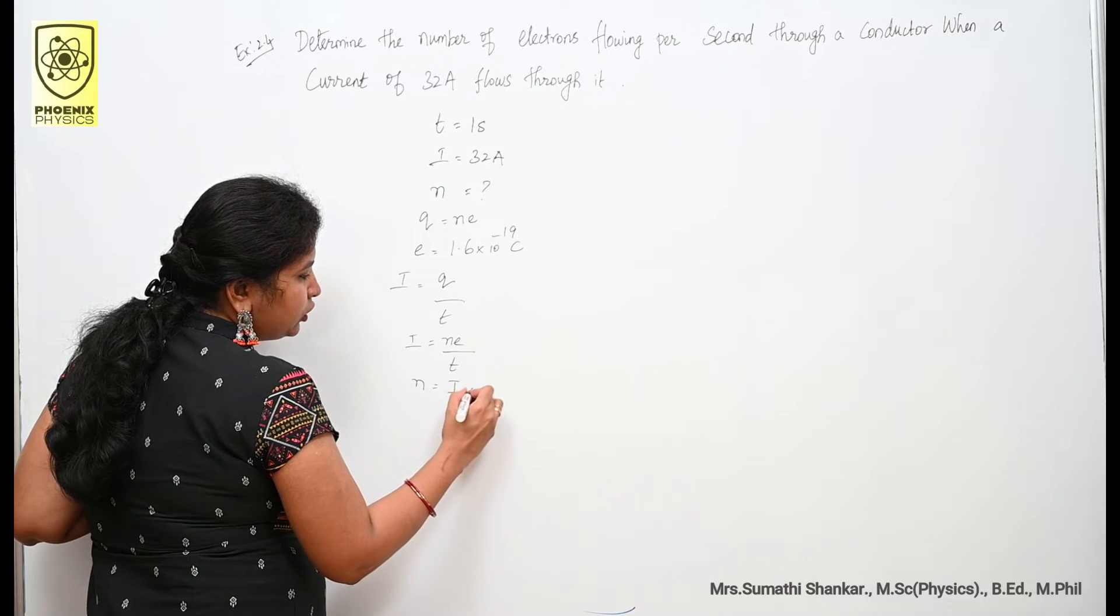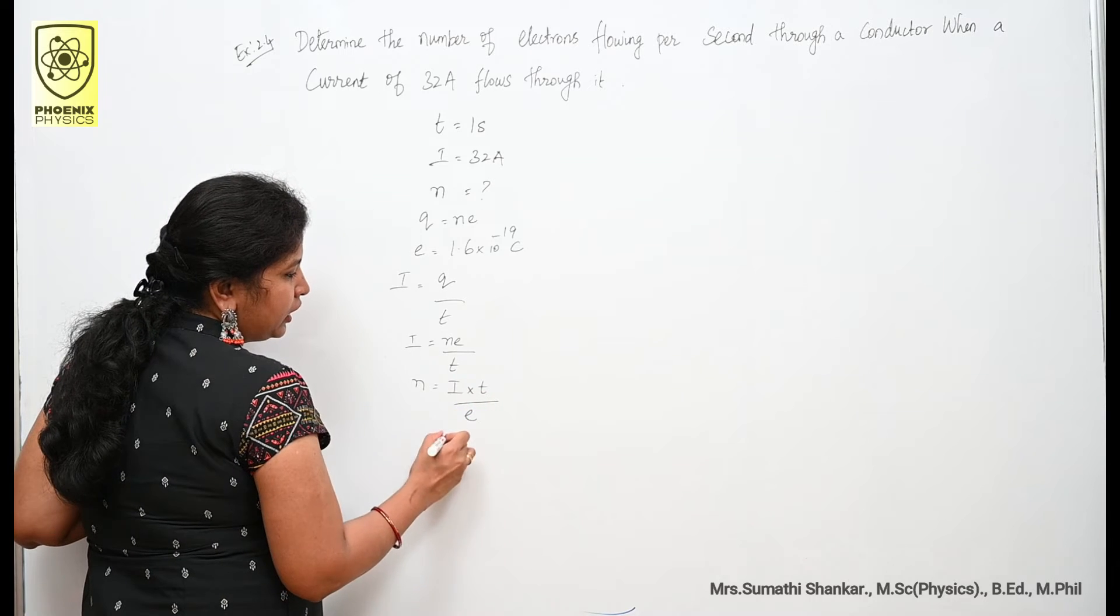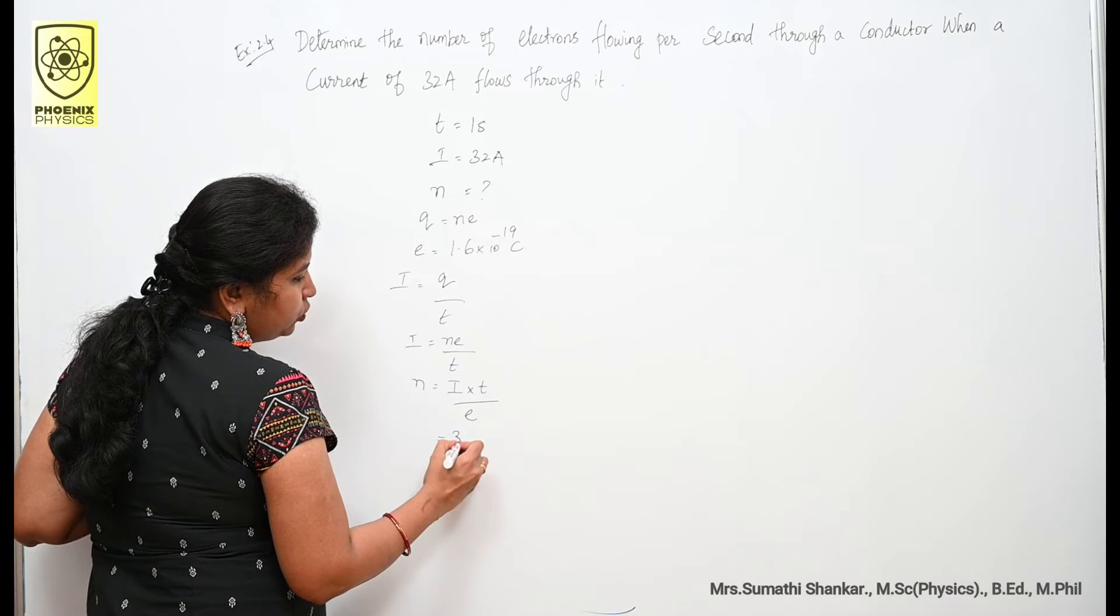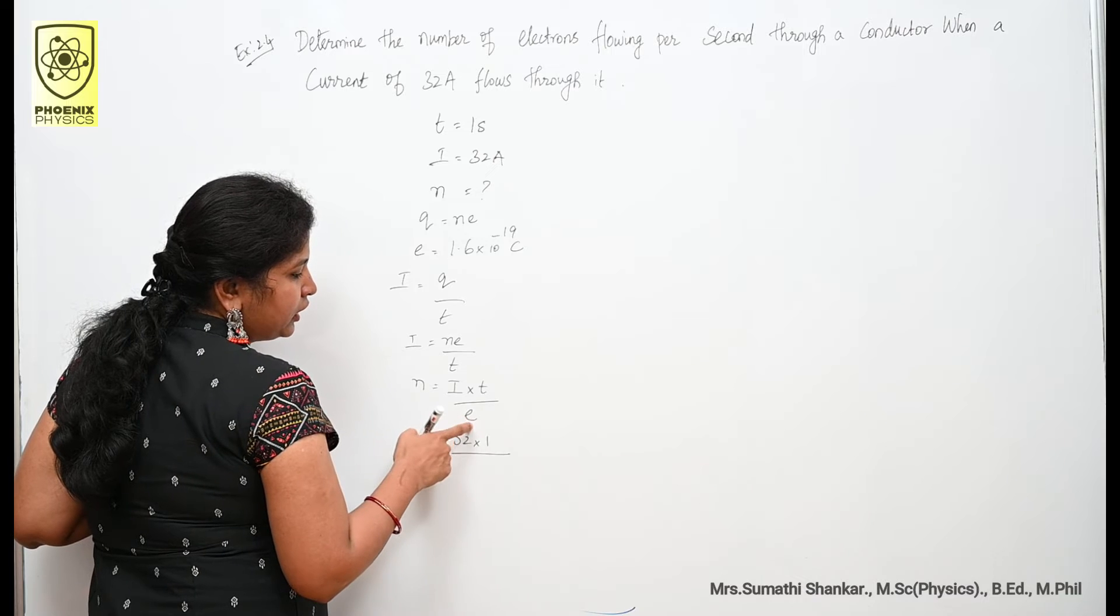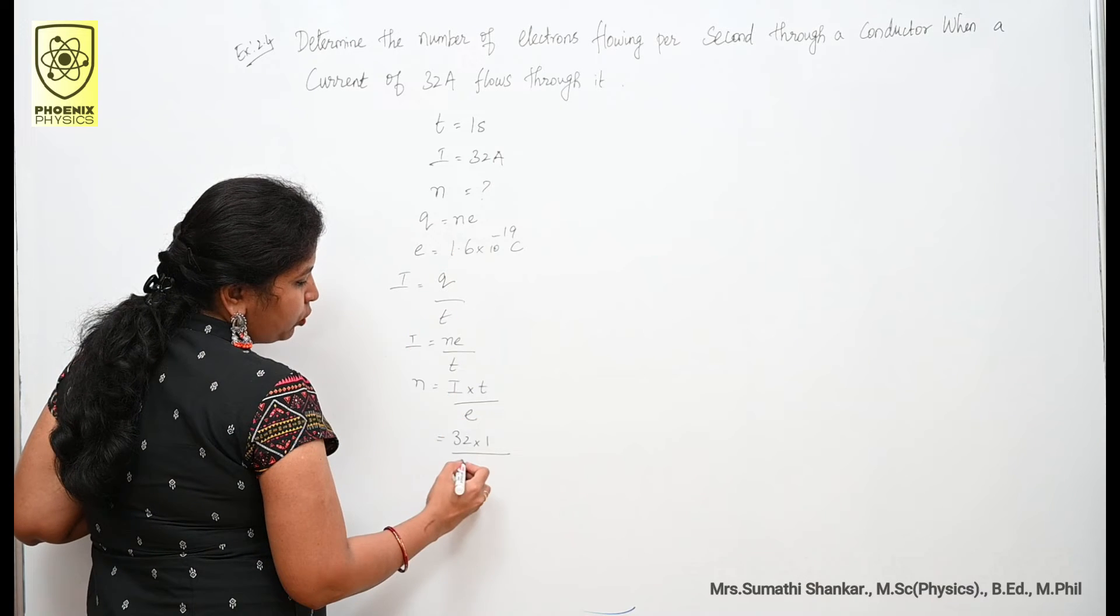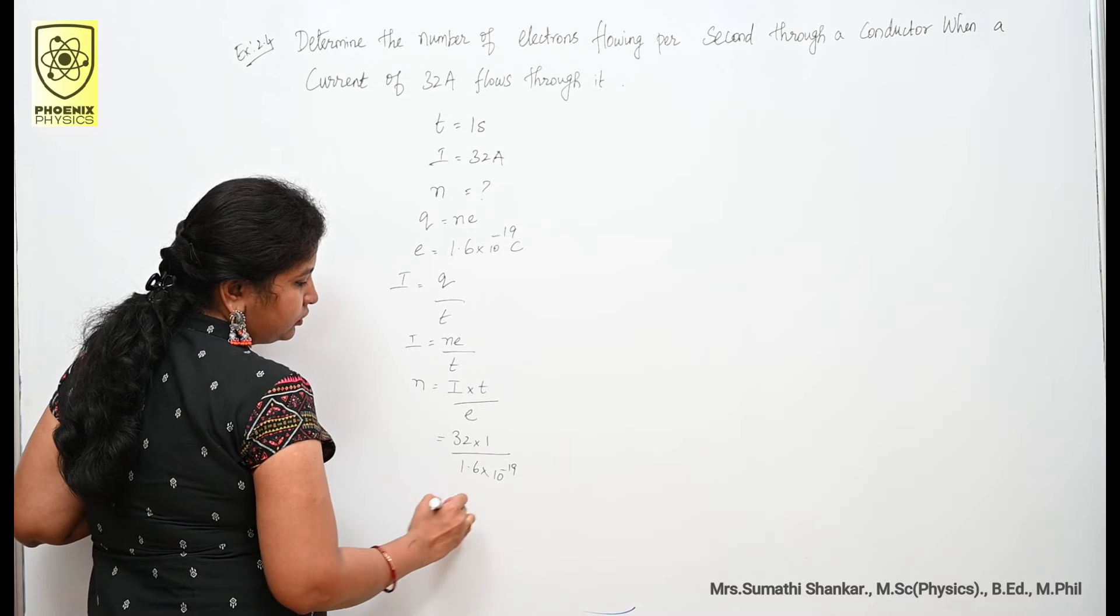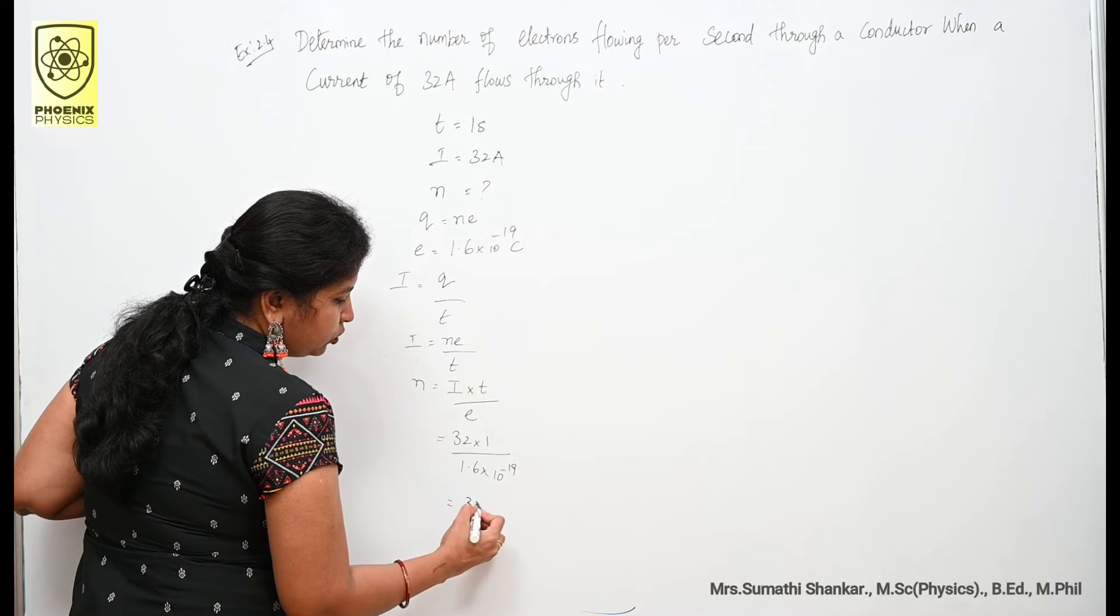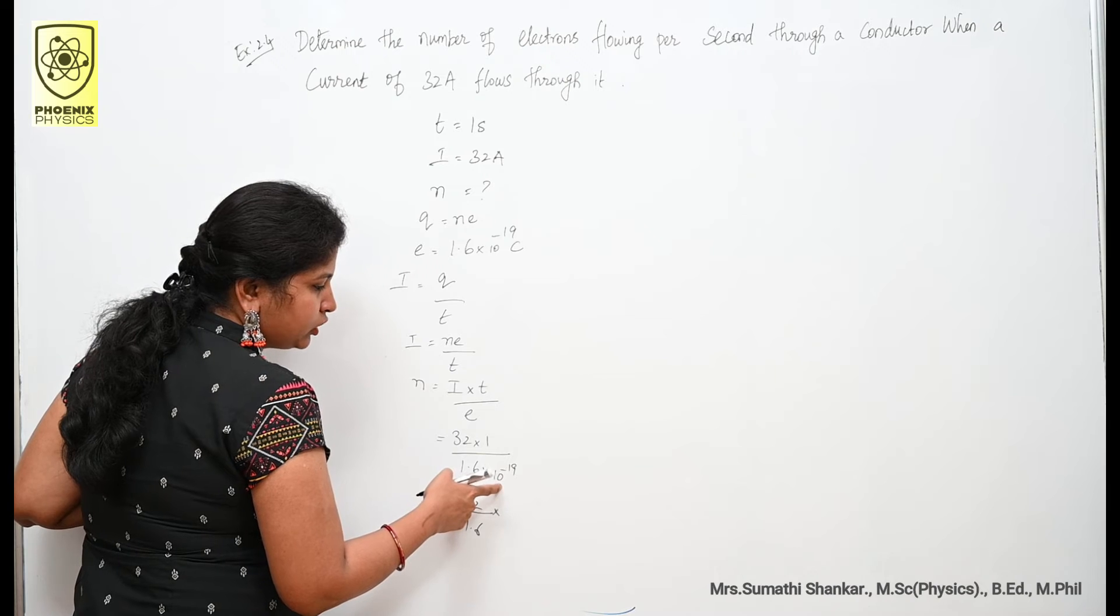I is 32, one second, so one divided by e is 1.6 into 10 to the power of minus 19. So 32 divided by 1.6, bring this 10 to the power of minus 19 to numerator, that is 10 to the power of plus 19.